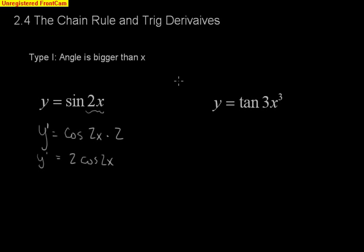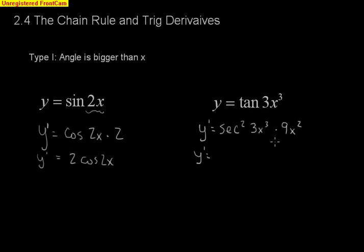Looking at one where the angle is a little bigger than just 2x, we've got y equals tangent of 3x cubed. Starting this off with the chain rule — the derivative of tangent is secant squared of 3x cubed, and then I need to multiply by the derivative of the angle, which by power rule is going to be 9x squared. So I'm going to have 9x squared times secant squared of 3x cubed. That's type 1 for the trig derivatives where the angle is something bigger than just x.